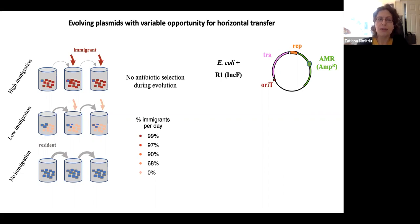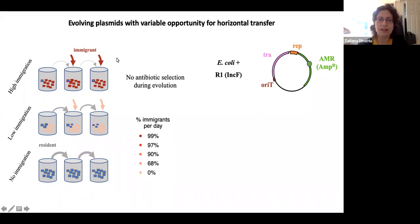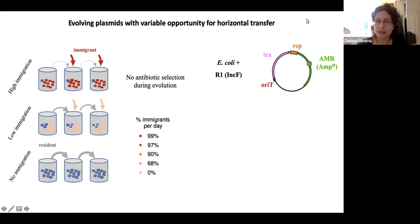The expectation was that with high immigration, plasmids would be selected to increase the rates of transfer. We had a no-immigration treatment as a standard control, and then treatments with increasing amounts of immigrant cells every day, up to 99% of plasmid-free cells added every day. There was no antibiotic selection during evolution, so plasmid-carrying cells could potentially go extinct.